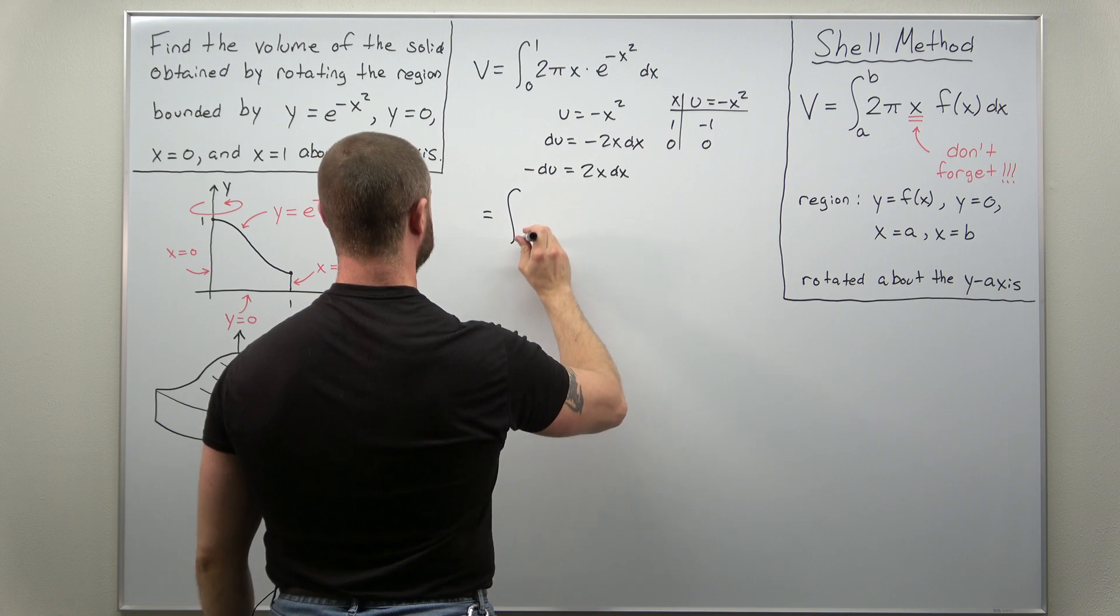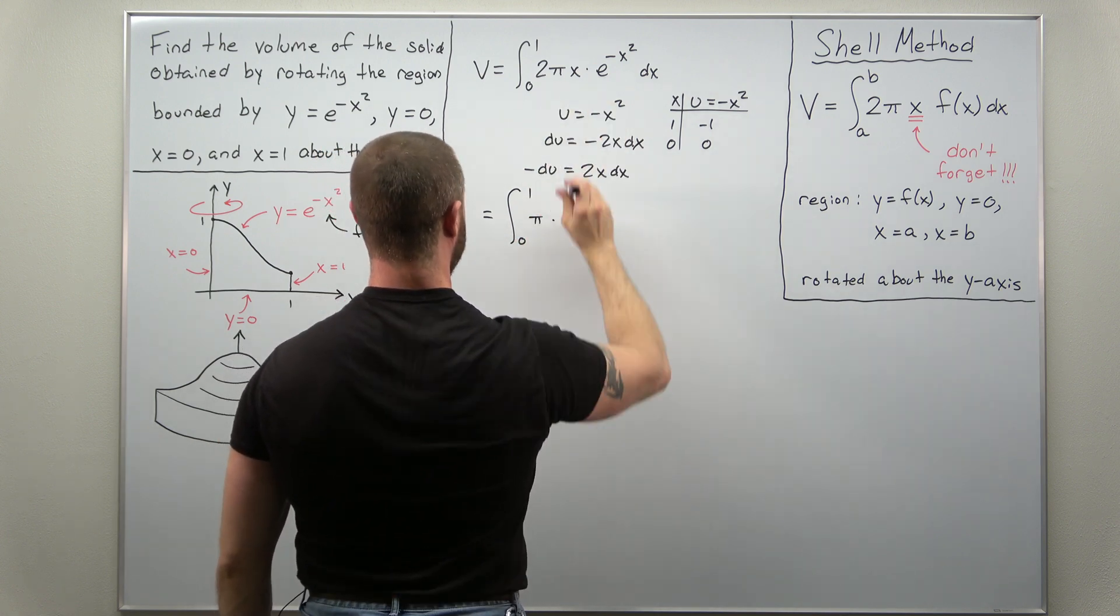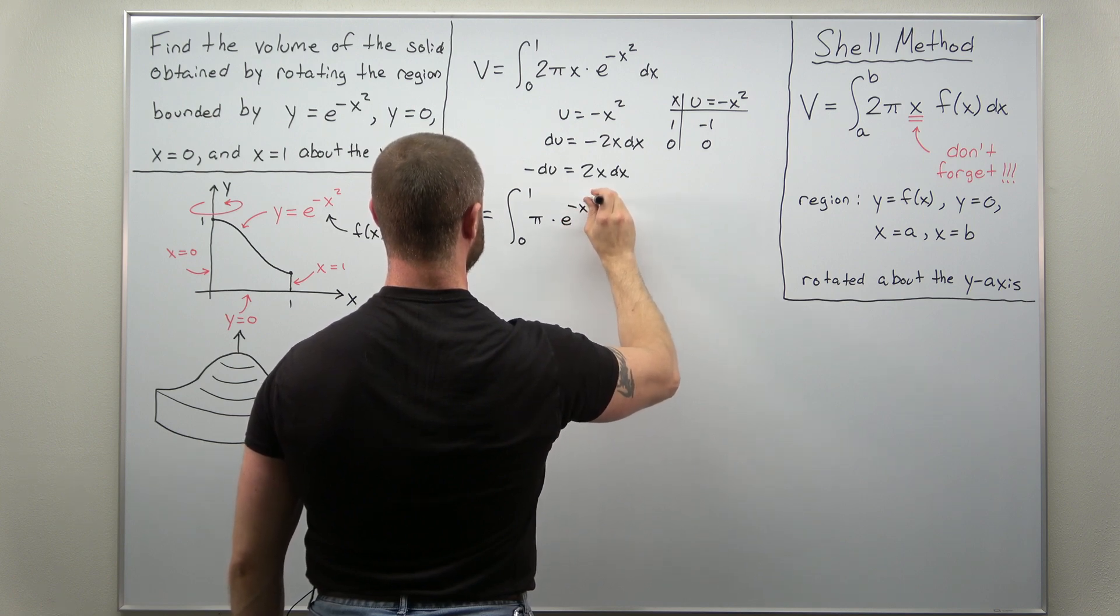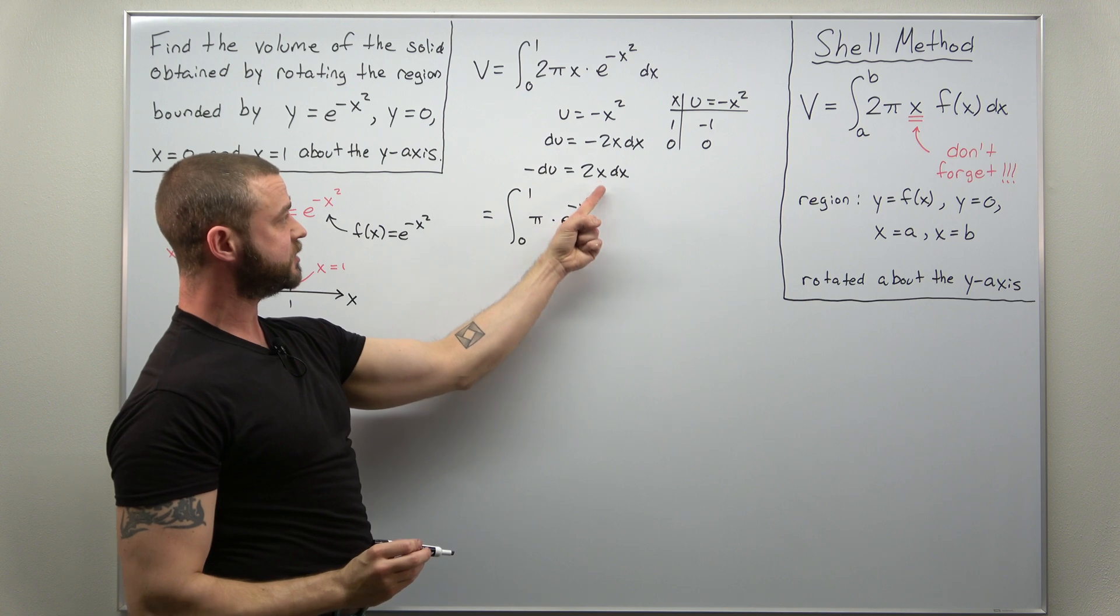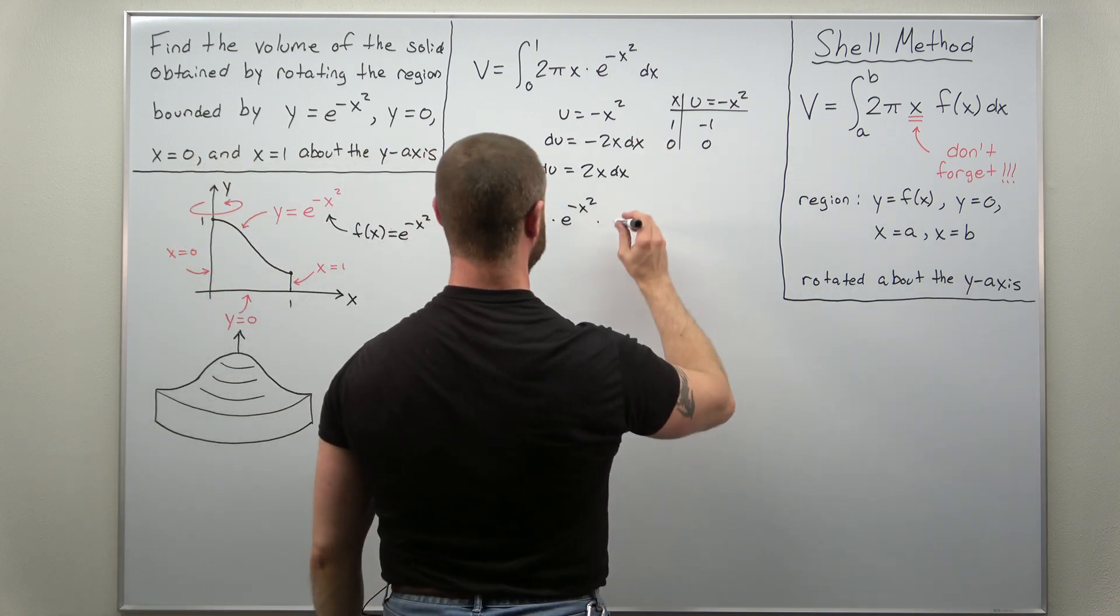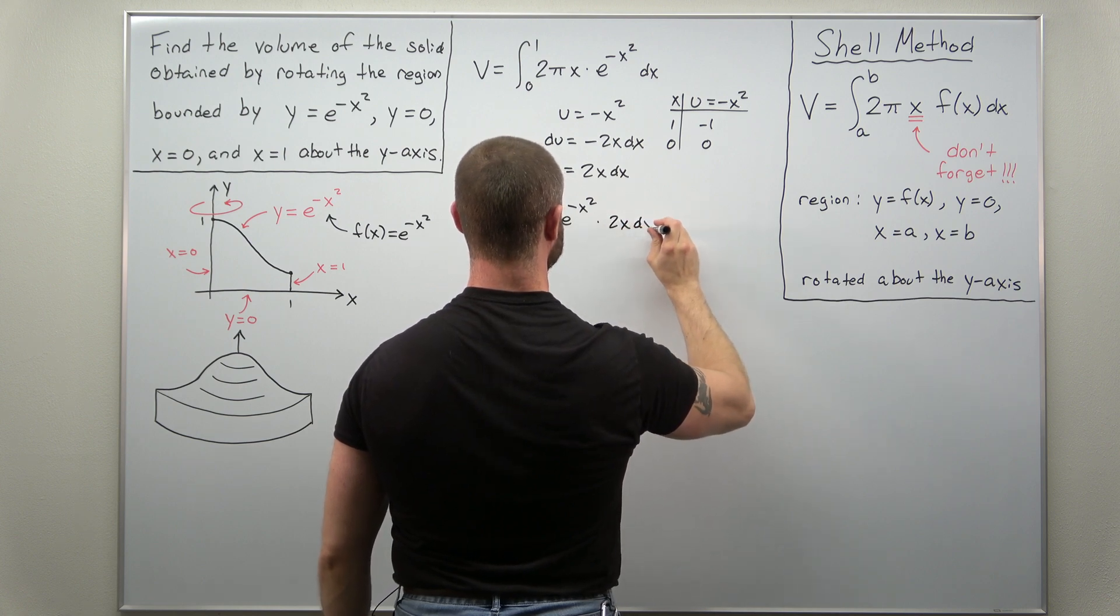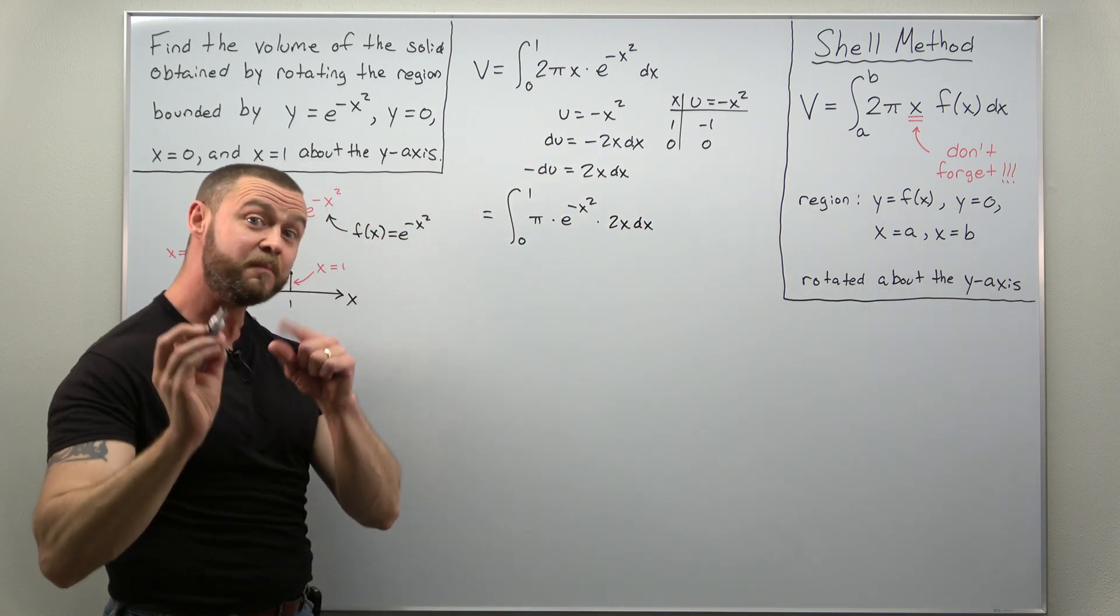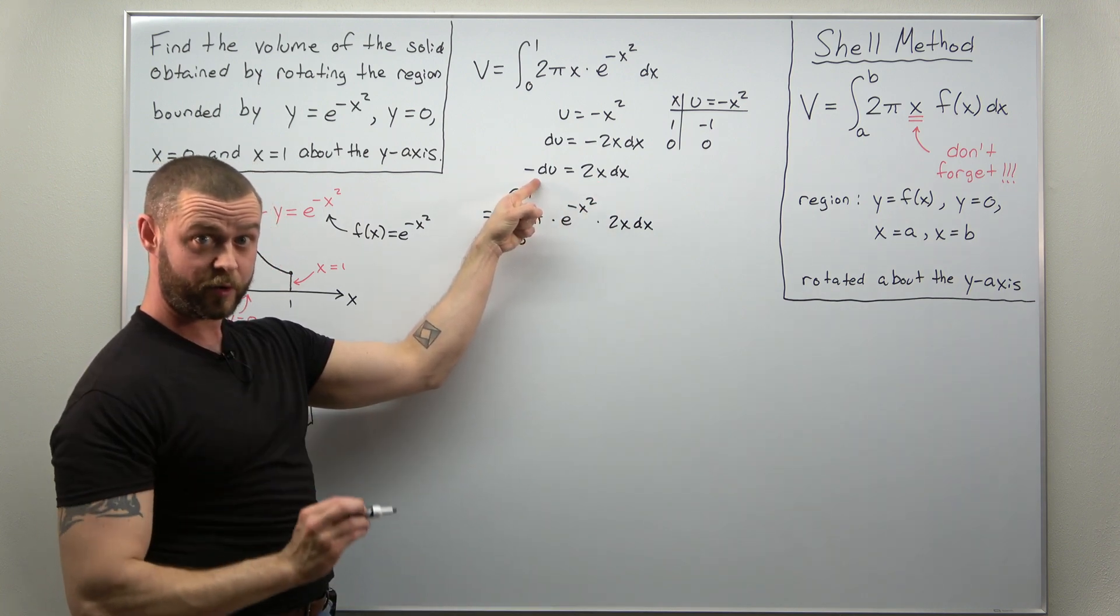So let's write this as the integral from 0 to 1. We have a factor of π times e to the negative x squared. And I'm pulling the factor of 2 and x because we have that in our differential at the end multiplying dx. So 2x dx. And that is basically going to come out to negative du from what we rewrote there.